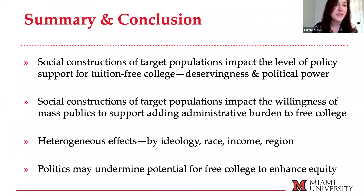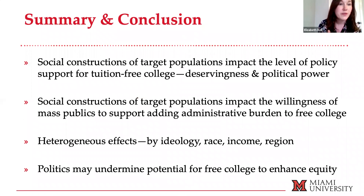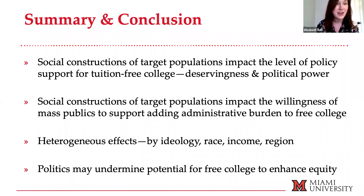The takeaways: first, social constructions of target populations impact both the level of policy support for tuition-free college and our willingness to add administrative burden. We know that's really important because administrative burdens actually impact folks who have lower levels of social and political capital the most. So instead of enhancing equity, we could actually be undoing equity and contributing to more inequality in college access and affordability.